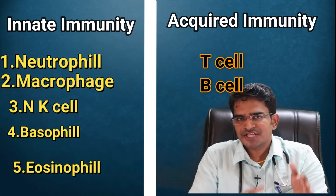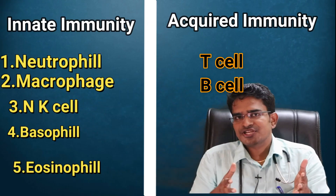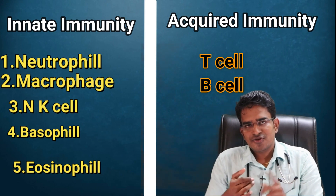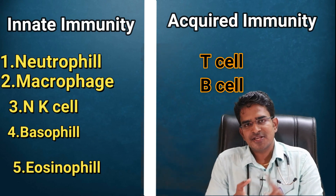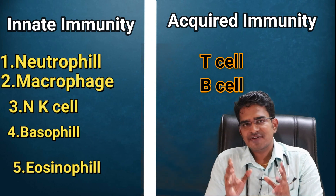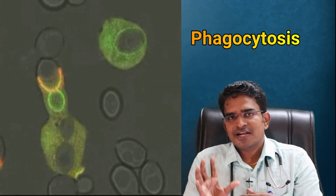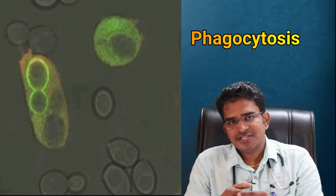This virus is transmitted by Aedes aegypti mosquitoes. When the virus enters the body, we have innate immunity that responds first. We use neutrophils, macrophages, natural killer cells, basophils, and eosinophils. These innate immune cells respond directly to pathogens entering the body. This is innate immunity.